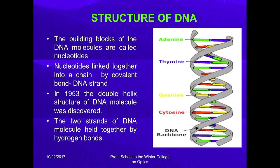The building blocks of the DNA molecule are called nucleotides. There are four nucleotides which make up the structure of DNA: adenine, thymine, guanine, and cytosine. Nucleotides link together into a chain by covalent bonding. The double helix structure of the DNA molecule was discovered in 1953, and the two strands are held together by hydrogen bonding — the bonding between hydrogen and an electronegative atom.